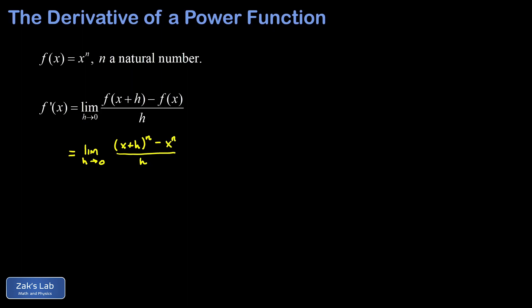Now we get to the challenging part: how do we raise a binomial to the nth power? We've got (x+h) to the nth power where n is some positive integer. This means we multiply this binomial by itself n times — a string of n binomials all multiplied together. We have to remember how to multiply polynomials in general. We're used to multiplying two binomials using FOIL, but the generalization is that you find every possible product containing one term from each polynomial and add all those together.